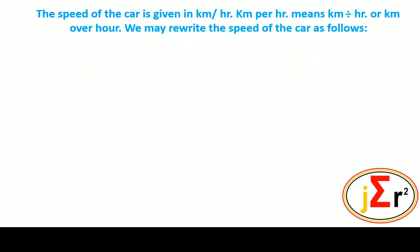The speed of a car is given in kilometers per hour. Kilometer per hour means kilometer divided by hour, or we may express that as kilometers over hour.